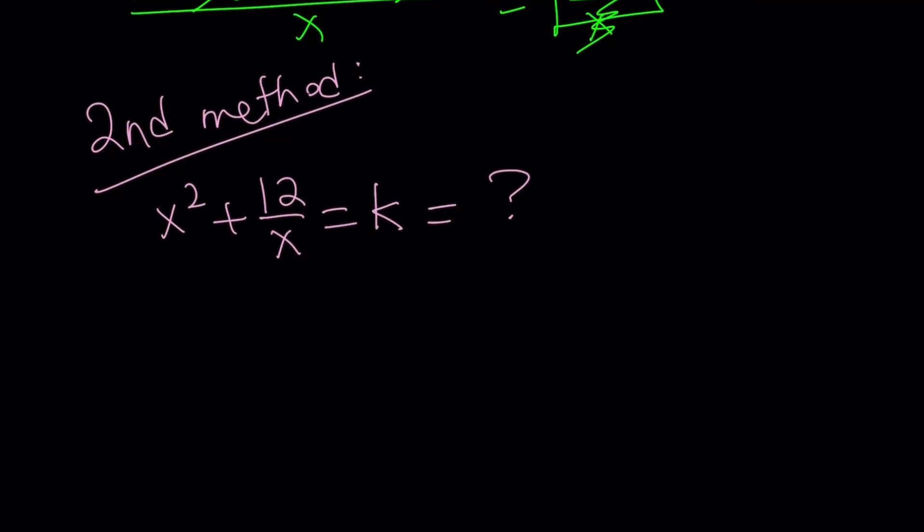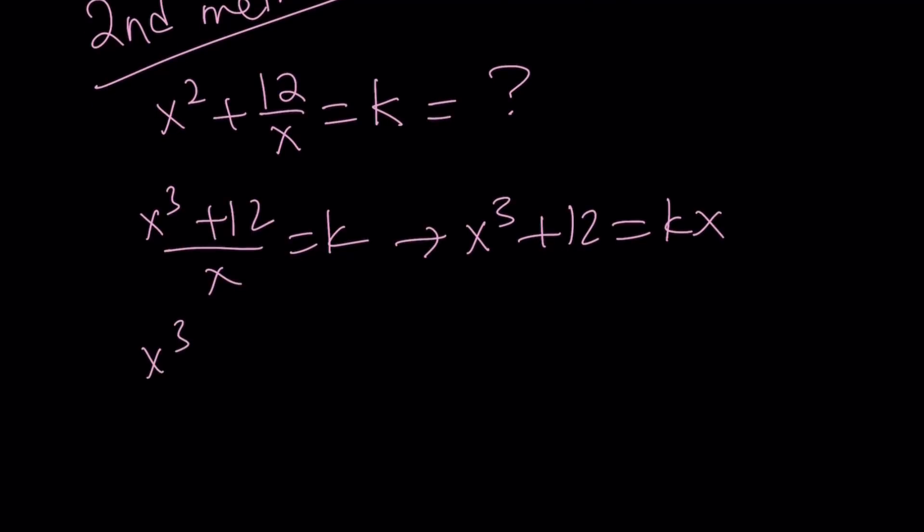Now let's make a common denominator. x cubed plus 12 divided by x equals k. And then let's cross multiply and arrange this equation. Let's put everything on the same side. That gives us x cubed minus kx plus 12 equals 0. So this kind of gave us a cubic and we got this.